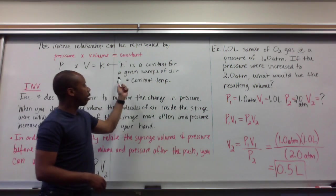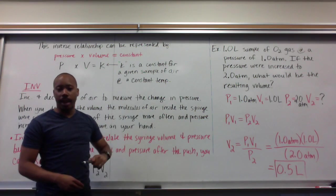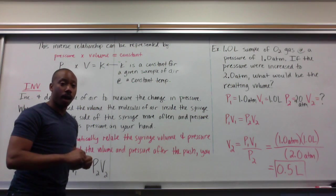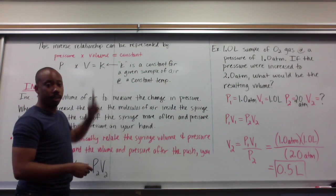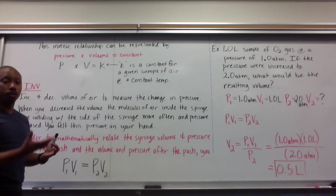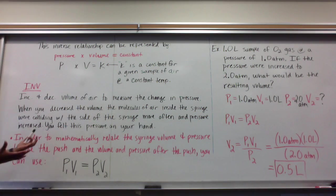Pressure times volume equals constant. Now, this K is a constant for a given sample of air at constant temperature. So all these given samples of air will all have the same constant here. So in order to keep this constant, pressure and volume have to alternate or be inversely proportional.